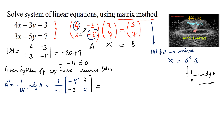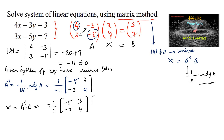Now x equals A inverse times b, that is negative 1 over 11 times the matrix with entries negative 5, 3, negative 3, 4, multiplied by the b matrix with entries 3 and 7.